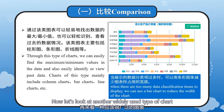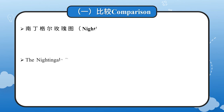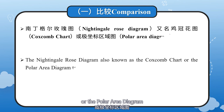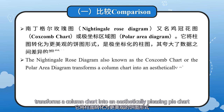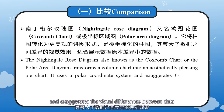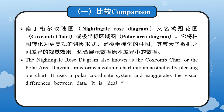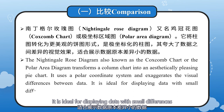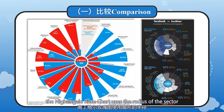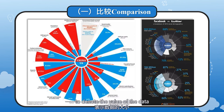Now let's look at another widely used type of chart: the Nightingale-Rose chart. The Nightingale-Rose diagram, also known as the Cox-Comb chart or the Polar Area Diagram, transforms a column chart into an aesthetically pleasing pie chart. It uses a polar coordinate system and exaggerates the visual differences between data. It is ideal for displaying data with small differences. Unlike a pie chart that uses angle to represent numerical value or proportion, the Nightingale-Rose chart uses the radius of the sector to denote the value of the data, with each sector angle consistent.